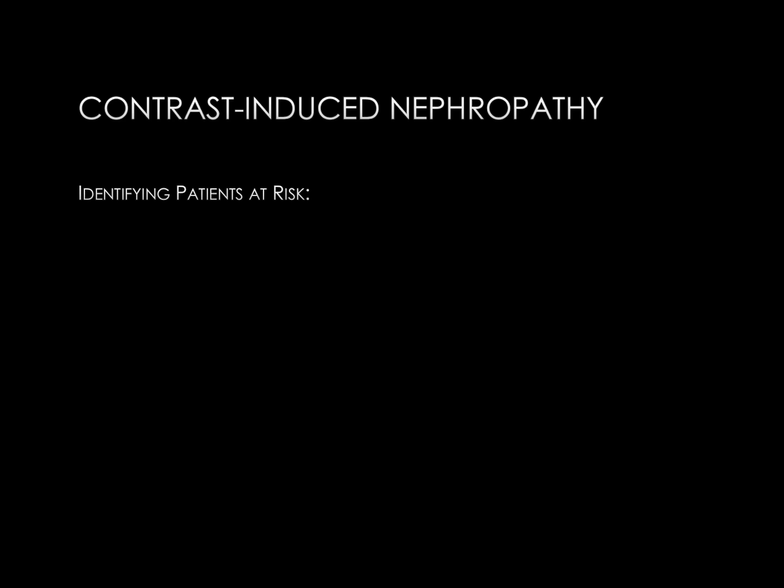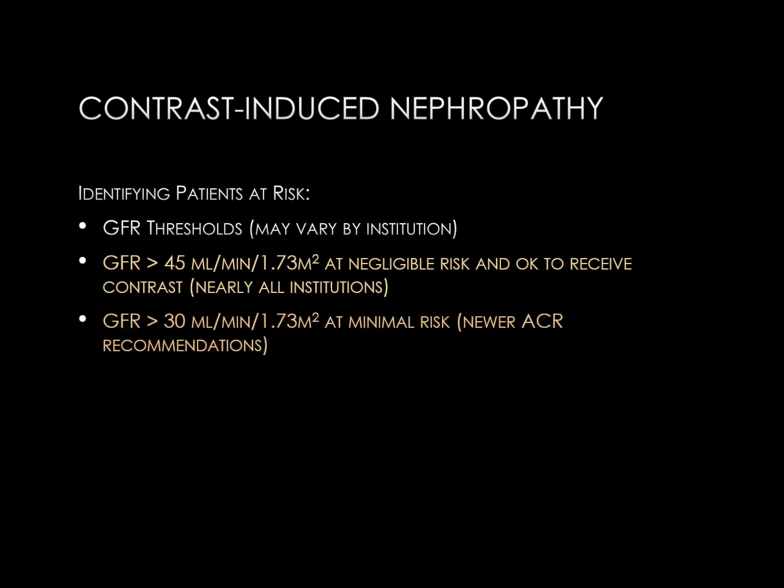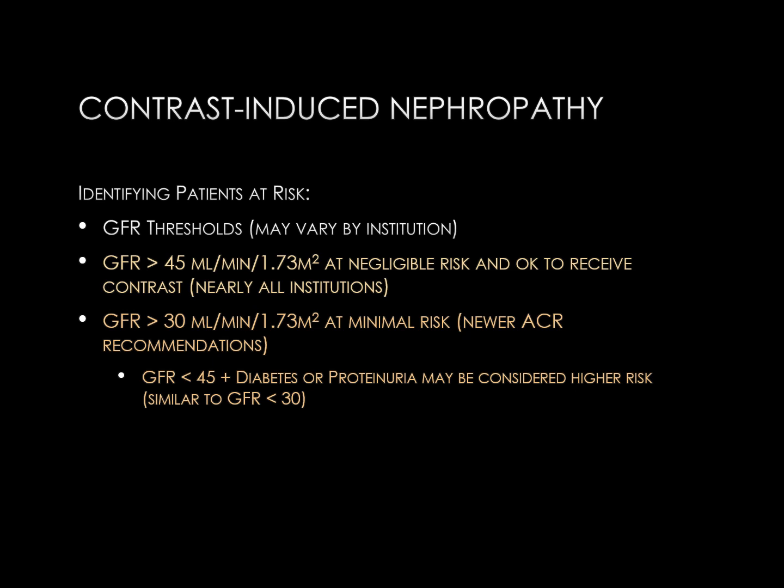Identifying patients at risk: several GFR thresholds are used and these vary by institution. The most conventional is that if your GFR is more than 45, you are okay to receive contrast pretty much anywhere. Some newer recommendations from the ACR state that if the GFR is actually above 30, these patients are at minimal risk and should pretty much always be able to receive contrast material. An exception would be if their GFR is less than 45 and they have other risk factors such as diabetes or proteinuria, which indicates pre-existing renal disease.